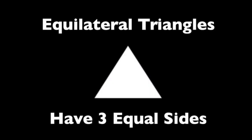Equilateral triangles have three equal sides. The best way to remember this is it looks like the word 'equal' at the beginning of equilateral. And if you play football, a lateral is a football thrown to the side, not forward — so equilateral means equal-sided.